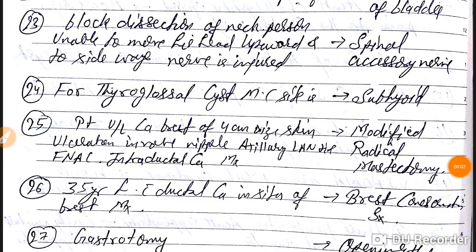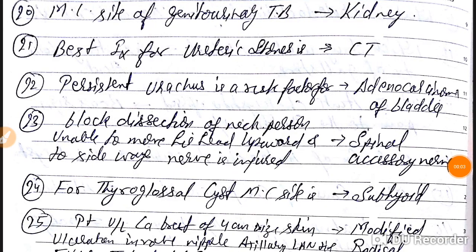Good evening doctors. Today we are going to discuss surgical PG previous year MCQs, Part 3. Question number 20: most common site for genitourinary tuberculosis. They are asking genitourinary — the most common site is kidney.